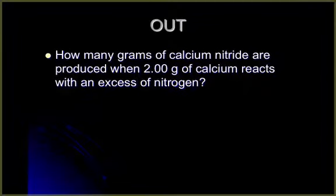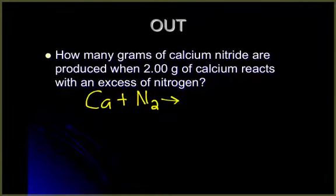Let's try another example. How many grams of calcium nitride are produced when 2.00 grams of calcium reacts with an excess of nitrogen? Let's write our equation. Calcium is reacting with nitrogen. Don't forget diatomic, right, N is N2. We're producing calcium nitride.